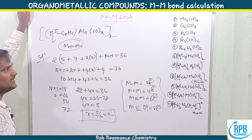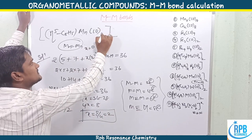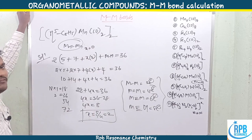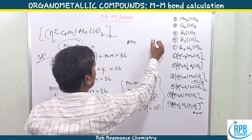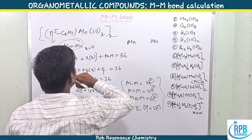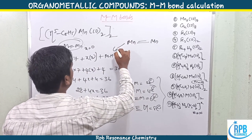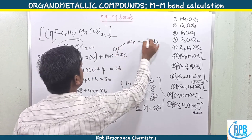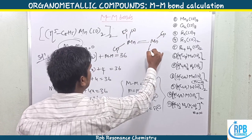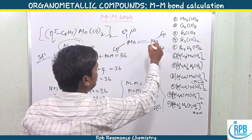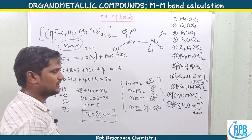So the molecular formula is [η⁵-CpMn(CO)₂]₂. The structure shows two Mn atoms with two Mn–Mn bonds, each Mn bearing one Cp ligand and two carbonyl groups. Based on further case studies, we can predict whether ligands are bridging or terminal. This completes problem 8.